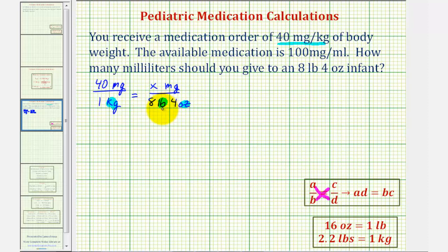We'll convert ounces to pounds, and then we'll convert the pounds to kilograms to finally solve for X. So we first want to convert four ounces to pounds. We can use the conversion 16 ounces equals one pound, and set up another proportion to convert four ounces to pounds.